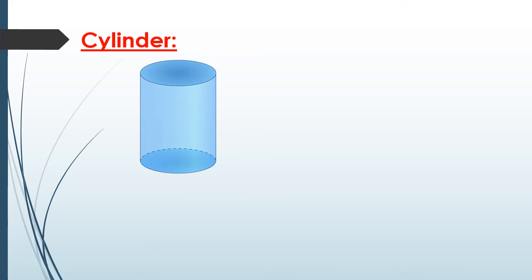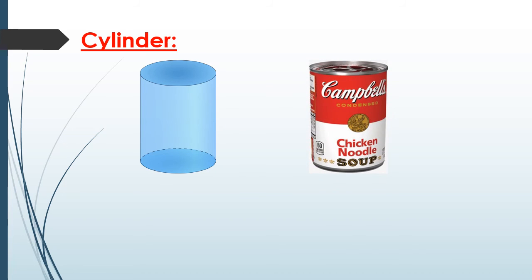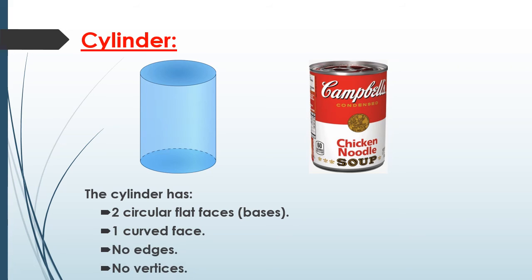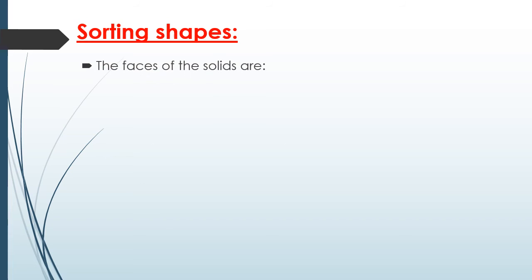The next shape is the cylinder, which is like a can, a glass of water, or a pencil. The cylinder has two circular flat faces like the base, one curved face, no edges, and no vertices.